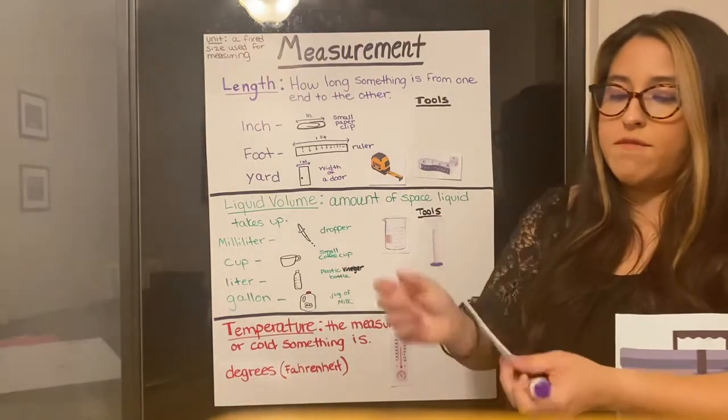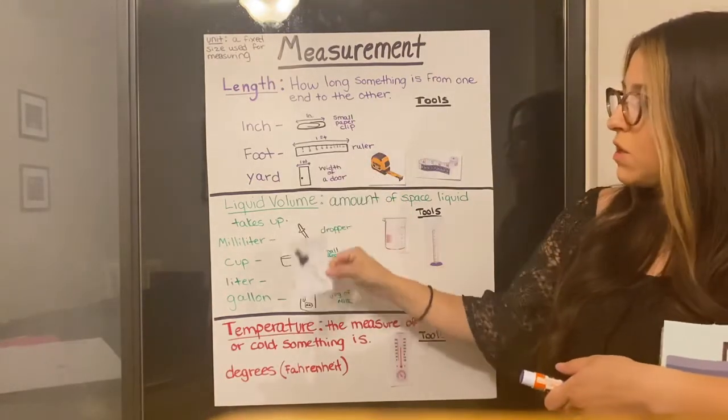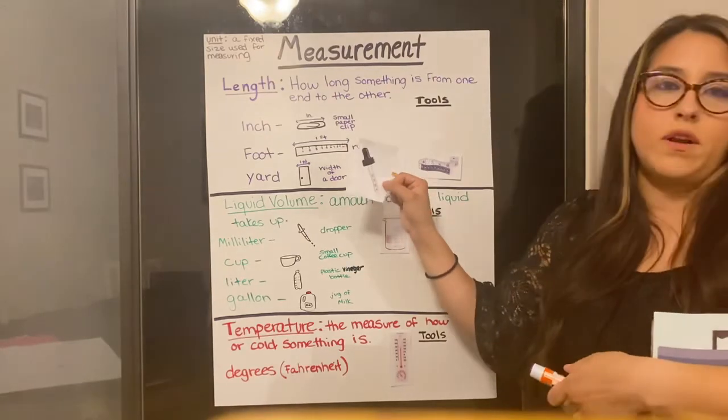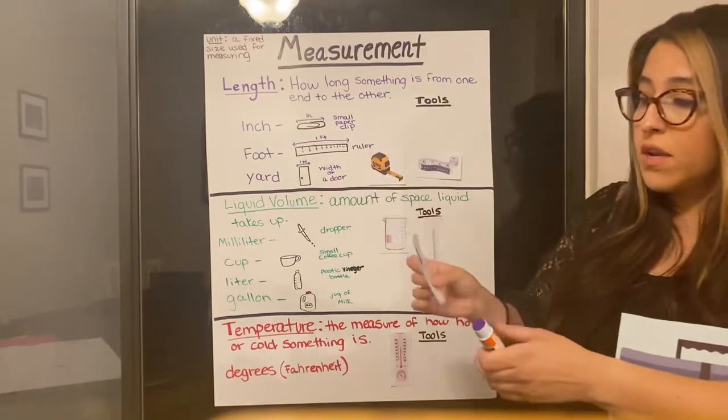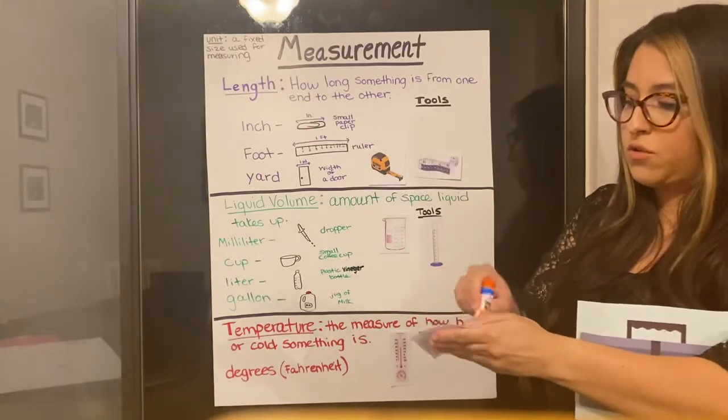Next we have a dropper. This was one of the examples on our chart. So this one holds exactly one milliliter. So sometimes if you're going to take some medicine, you might need to do half a milliliter. So this would be a time when you can use a dropper.